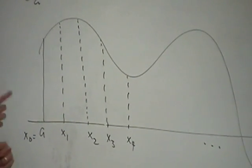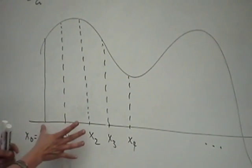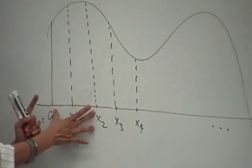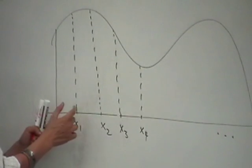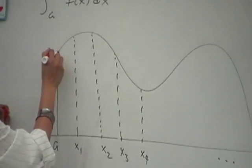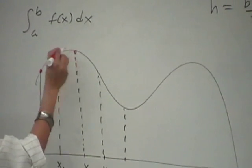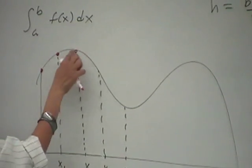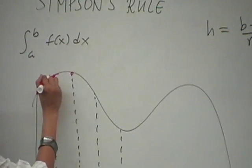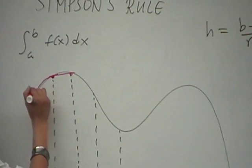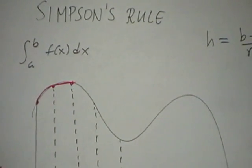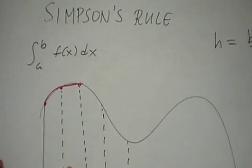In order to use parabolas, we have to consider two subintervals — two adjacent subintervals. Here are three points connected by a curve. We will try to find the best approximation using a parabolic function, meaning a quadratic function, that we'll graph as a parabola.